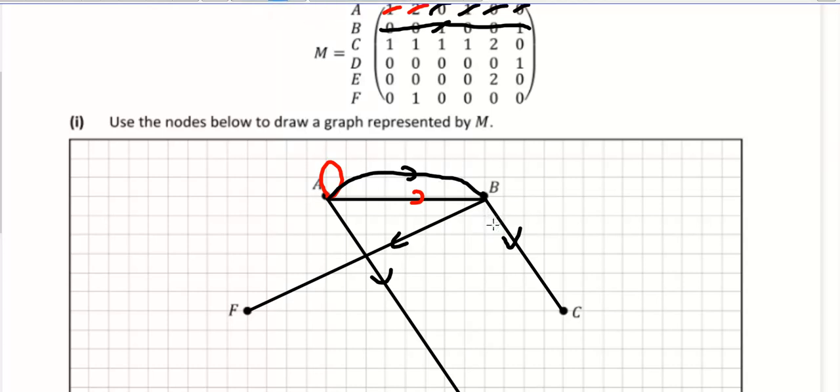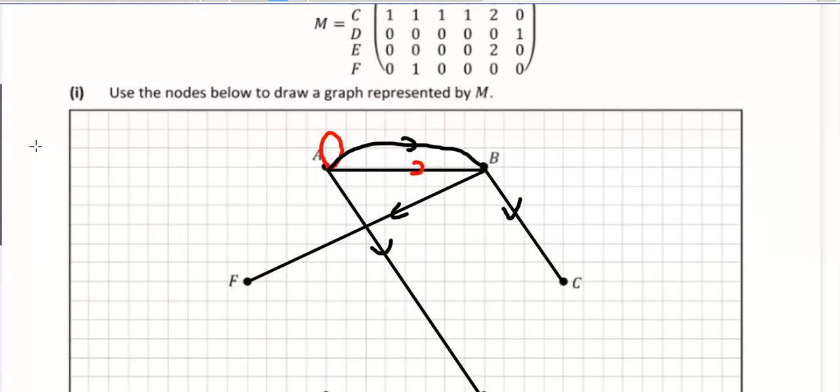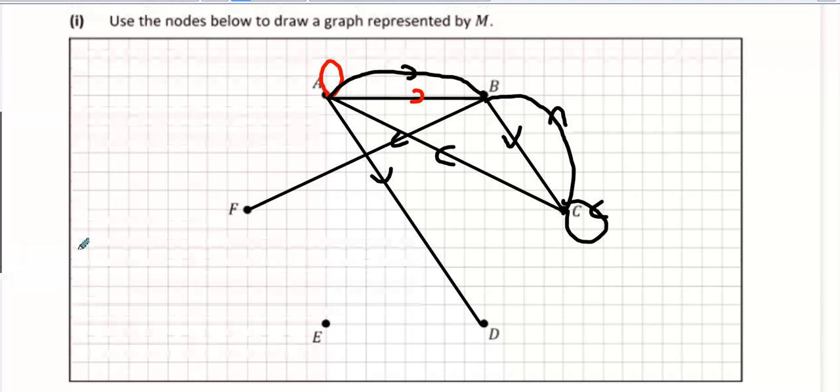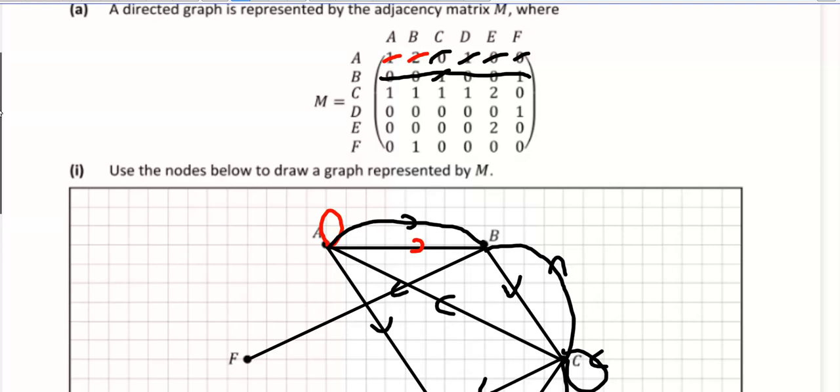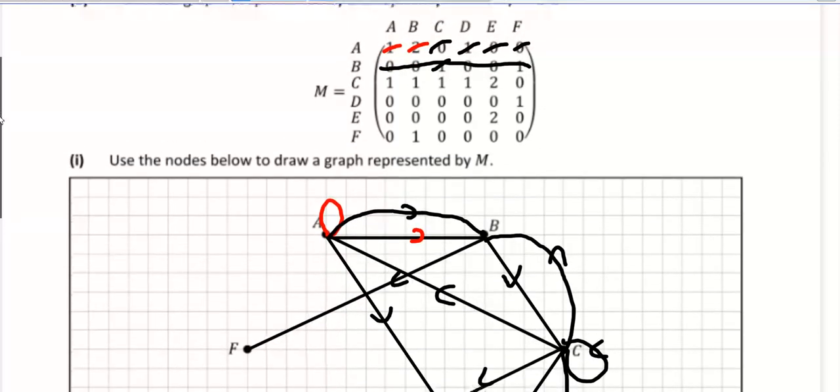Now, C links on to everything once apart from E where it links twice. So C goes to A once, C goes to B once, C goes to itself once, and E is the one that goes twice to. C goes to D, C goes to E once, and then it has to go twice. And it goes to F as well. No, it doesn't go to F. Done.